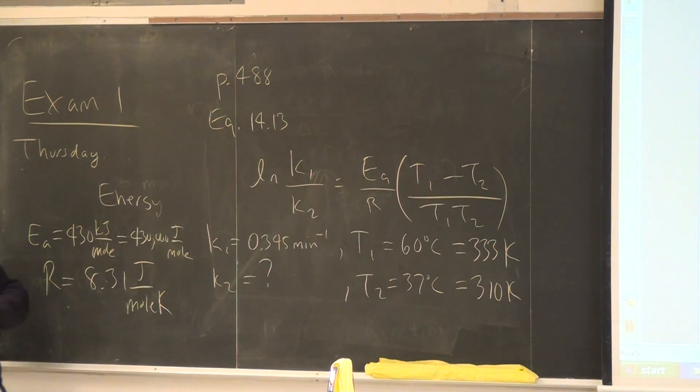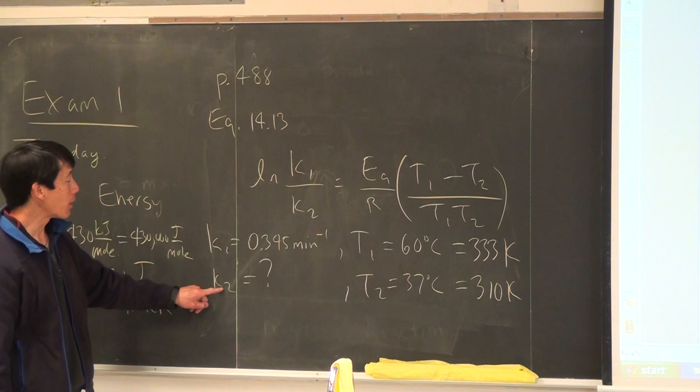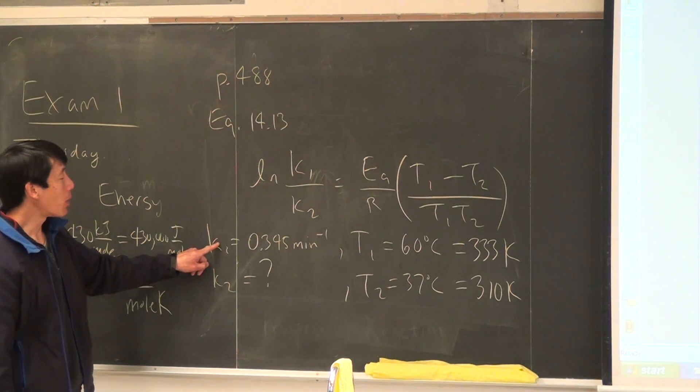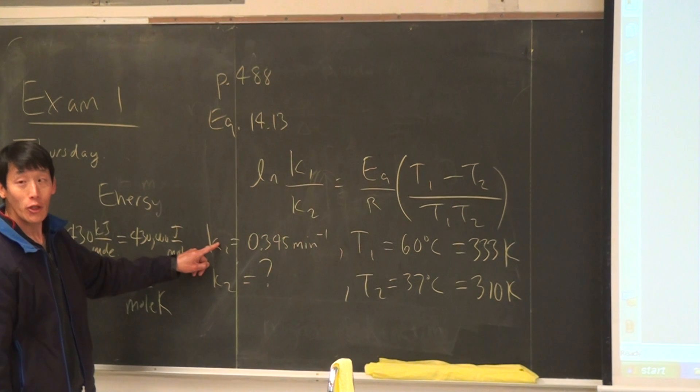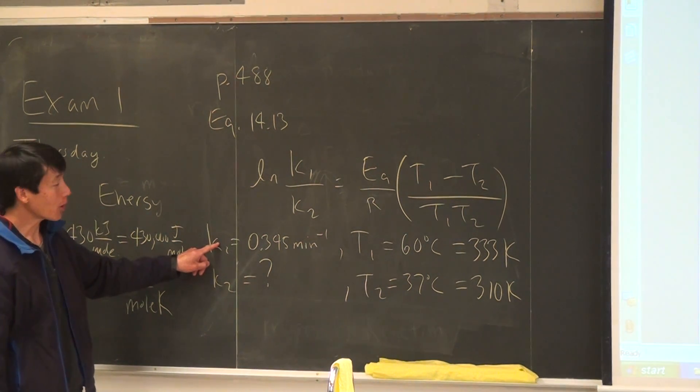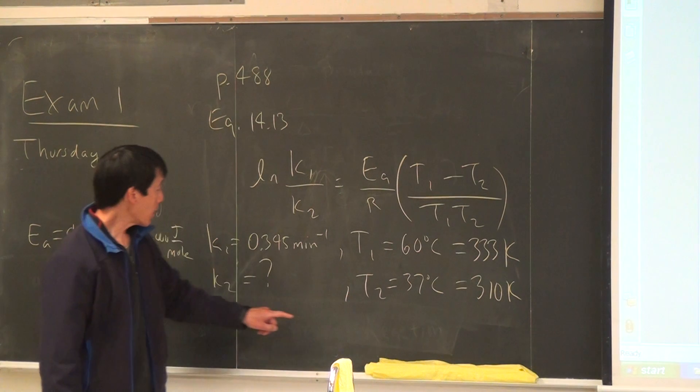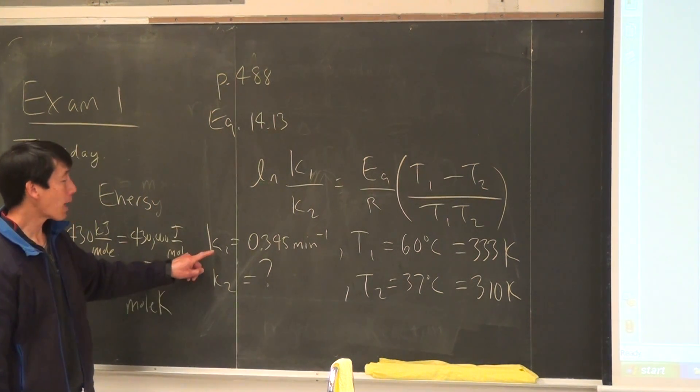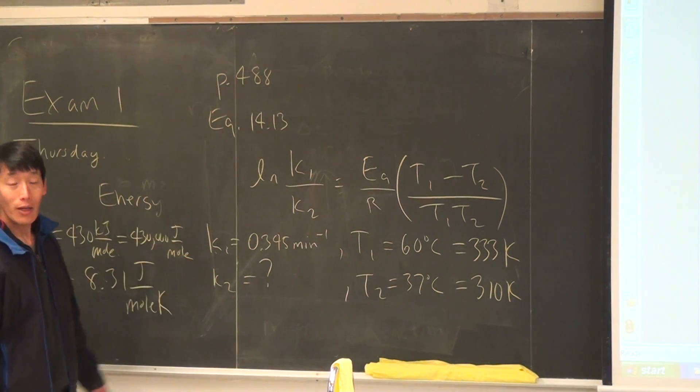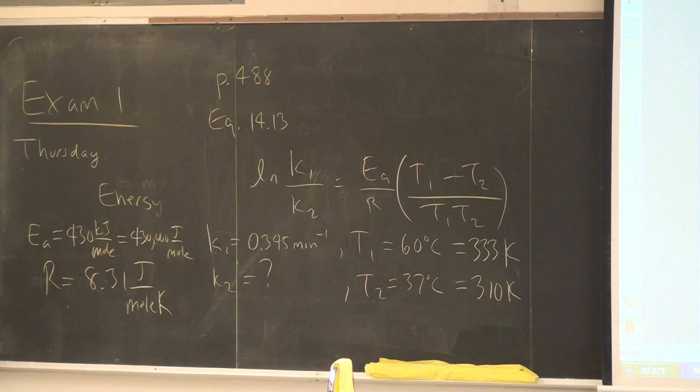So when you do this calculation, should K2 be larger or smaller than K1? It should be smaller. Note that at a lower temperature, K2 should be smaller than K1. So do you have to get an answer for K2?